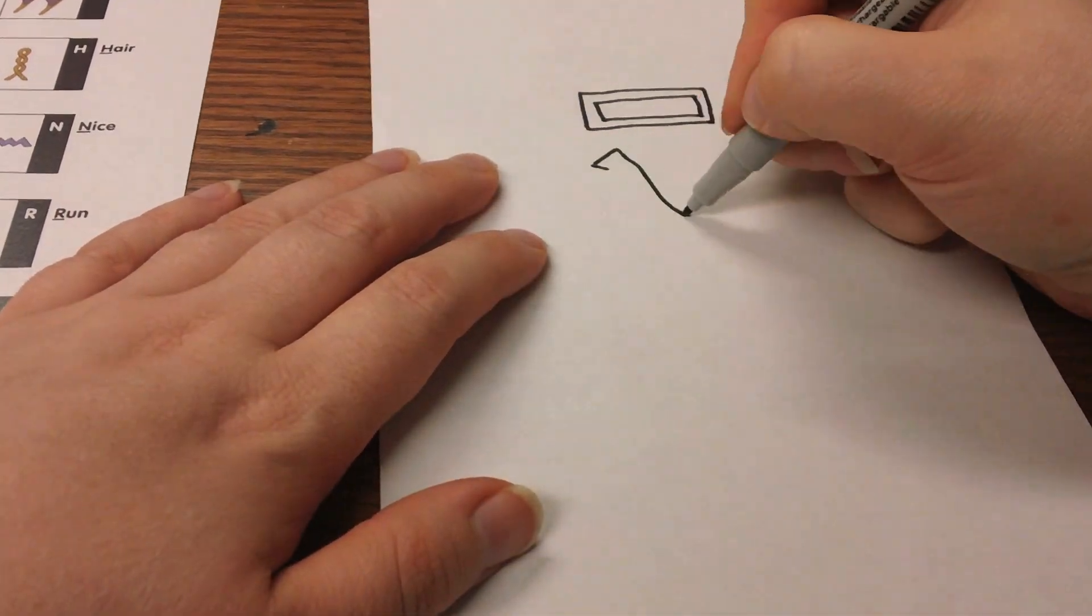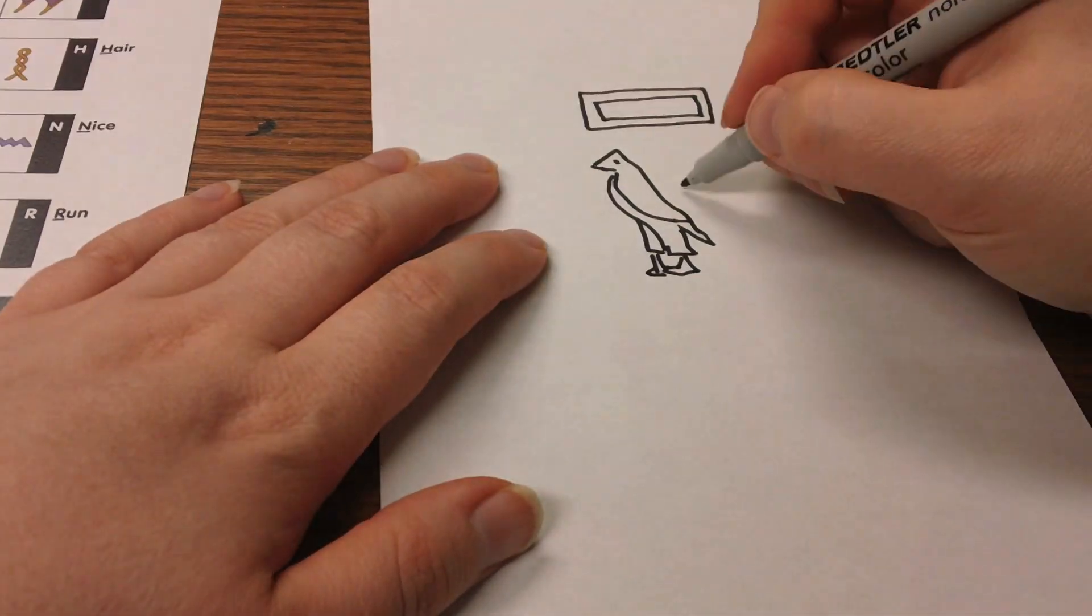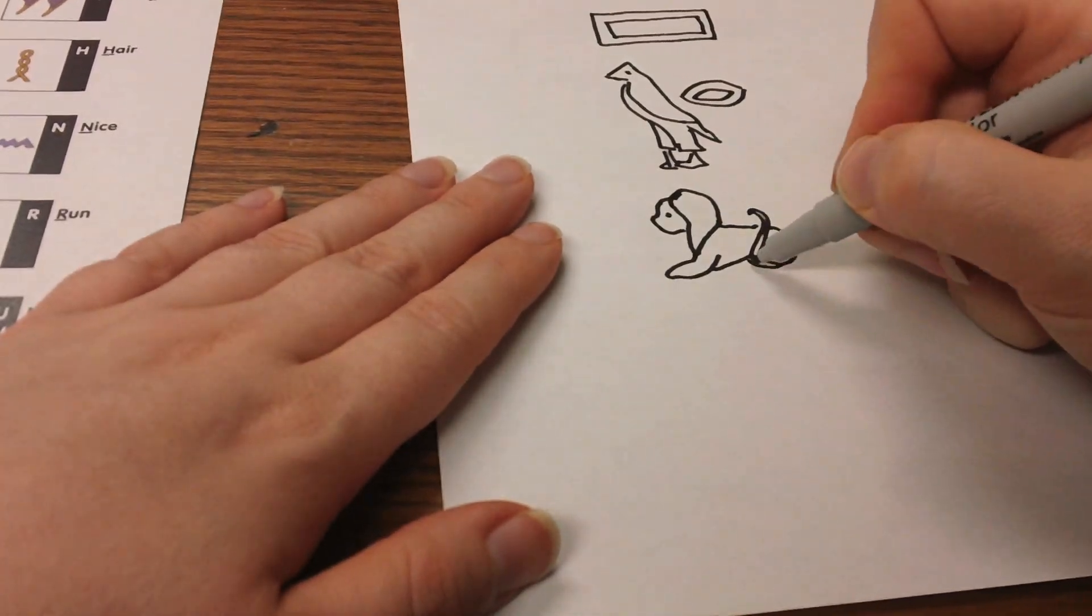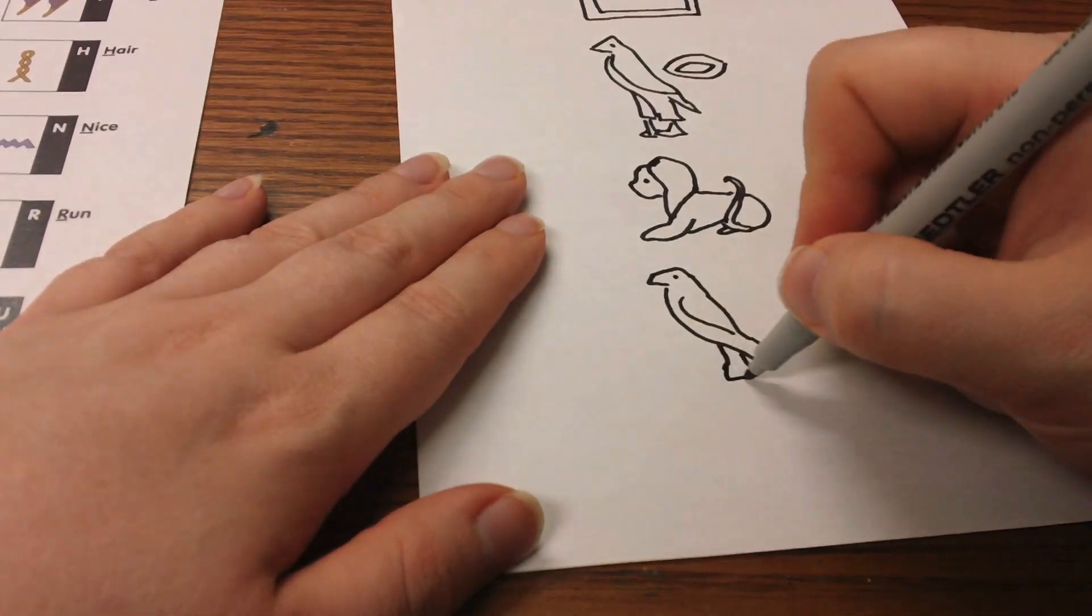Once you've figured out how your hieroglyphs are arranged, draw them out on a clean sheet of paper. If you'd like it to be neat, you can use pencil first and go over it with marker later.